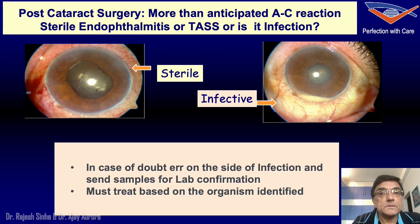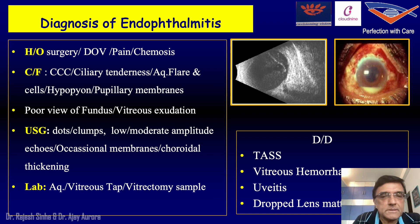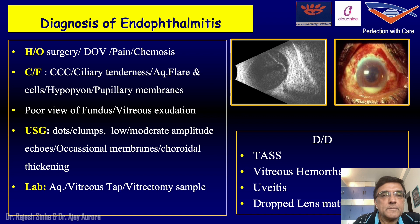When we have a hypopyon, here we have a patient with anterior segment inflammation. Whenever in doubt, you should always err on the side of infection. If you have a hypopyon, there is every good chance that it may be endophthalmitis. Ultrasound is diagnostic — it will show exudates within the vitreous cavity, there may be membranes and thickening of the choroid. You have to differentiate it from vitreous hemorrhage, uveitis, or dropped lens matter.